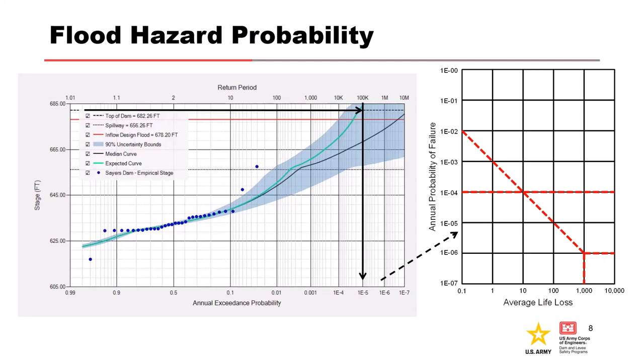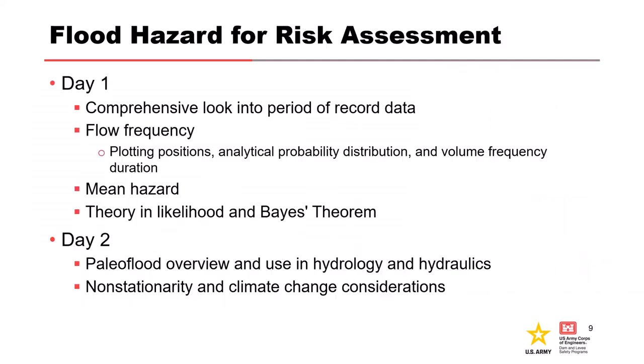It's important to understand what goes into making this loading curve because it makes up a third of the equation and has a lot of influence on whether the hazard is tolerable. If we assume the middle part — the performance or system response — is 1, and our average loss consequences are 0.1 to 1, we would plot this on the FN chart and say it's tolerable. But if the life loss was beyond 1,000, it would be plotted above the dashed tolerable risk guideline. At that point, risk decisions have to be made, and the uncertainty you provide plays into that.